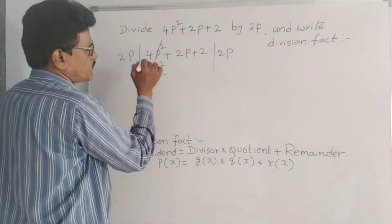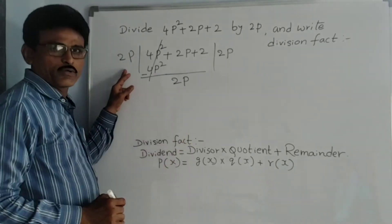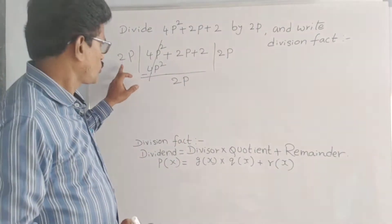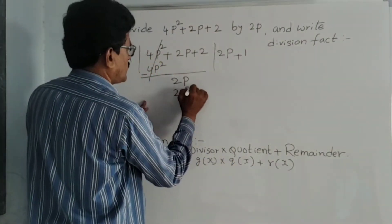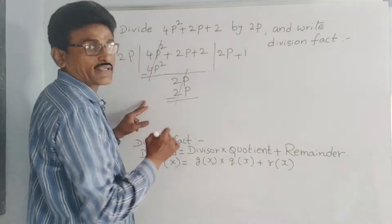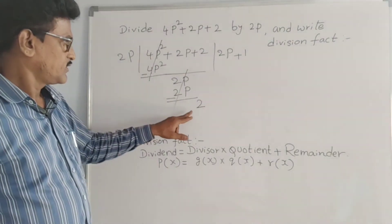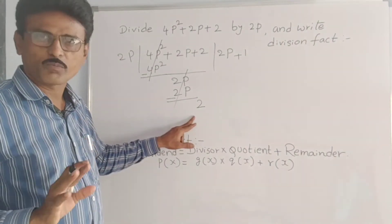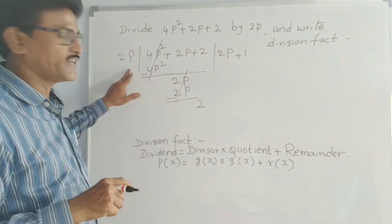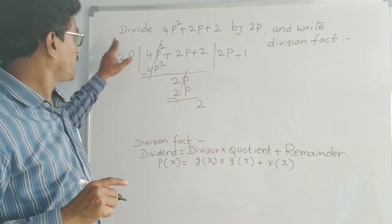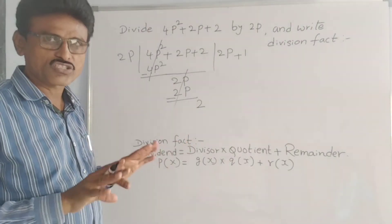Divide once again by 2P. 2P goes 1 time. Plus 1. 2P times 1 is 2P — this cancels. Now bring down 2. See here — 2 means it is a constant polynomial, degree 0. This is linear polynomial, degree 1. If the degree of remainder is less compared to divisor, then we have to stop the division. So here also we have to stop.